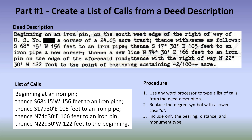Part 1 is about creating a list of calls from a deed description. We're first given a deed description taken from a 1978 deed, and then we extract a list of calls, as shown in the lower left-hand corner box. You can use any word processor, and what we're interested in is taking the bearing, distance, and monument type only from the deed. Only those three. The degree symbol is replaced in this type description with the lowercase d.